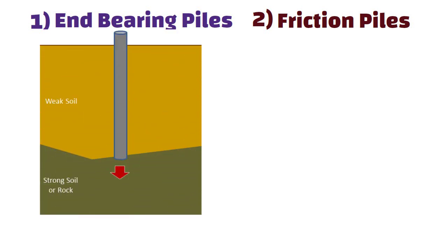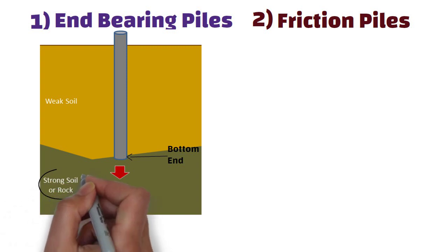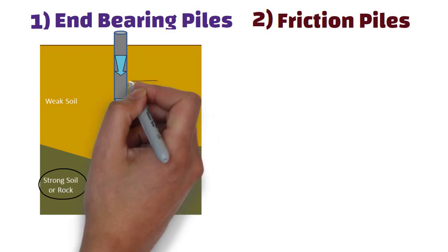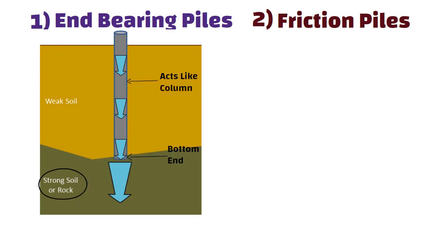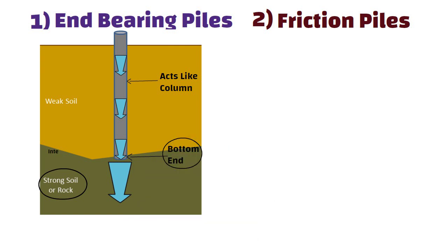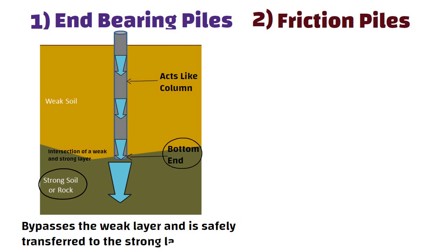In end bearing piles, the bottom end of the pile rests on a layer of especially strong soil or rock. The load of the building is transferred through the pile onto the strong layer. In essence, this pile acts like a column. The key principle is that the bottom end rests on the surface which is the intersection of weak and strong layers. The load therefore bypasses the weak layer and is safely transferred to the strong layer.